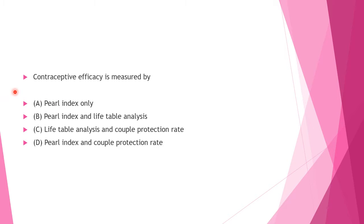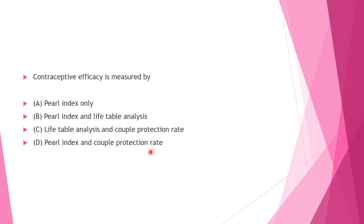Next question: Contraceptive efficacy is measured by — Option A: Pearl index only, Option B: Pearl index and life table analysis, Option C: Life table analysis and couple protection rate, Option D: Pearl index and couple protection rate. Answer to this question is Option B: Pearl index and life table analysis.